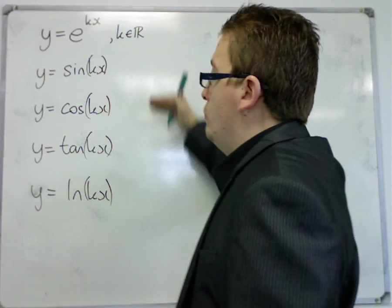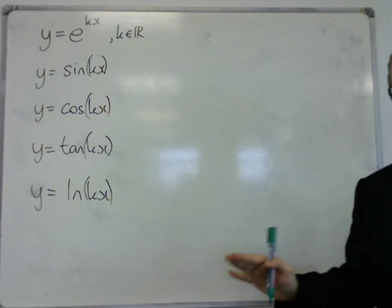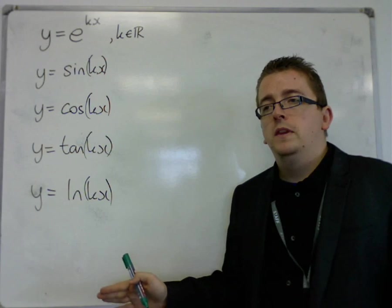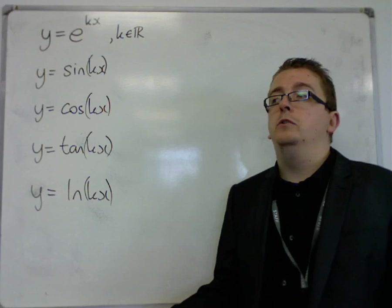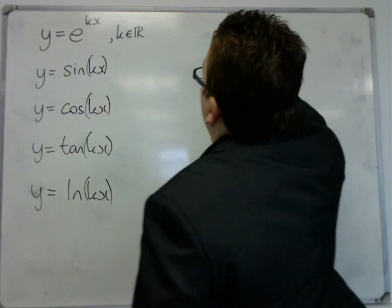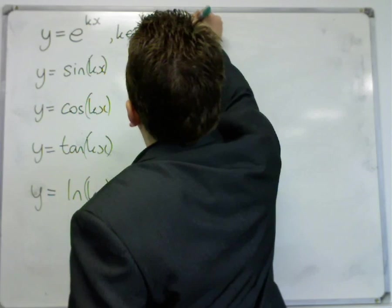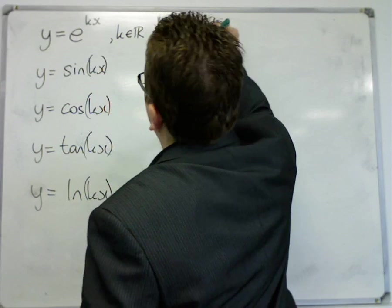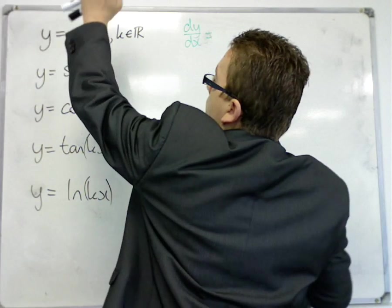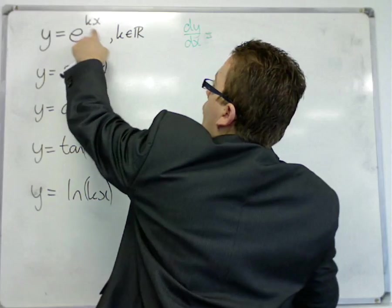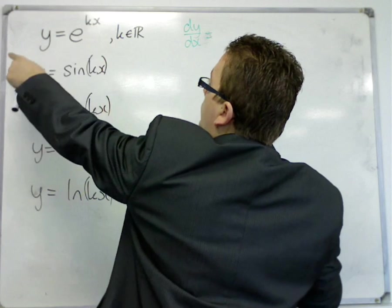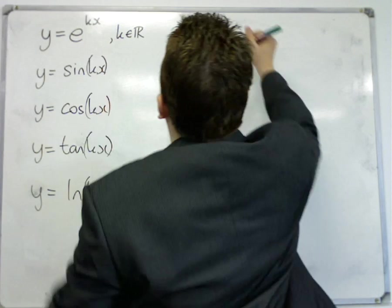Now, you can prove each of these using the chain rule, and it can be good practice to do so. So, dy by dx, in this case, the derivative of what is inside comes outside, so the derivative of kx is just k, so it's just ke to the kx.